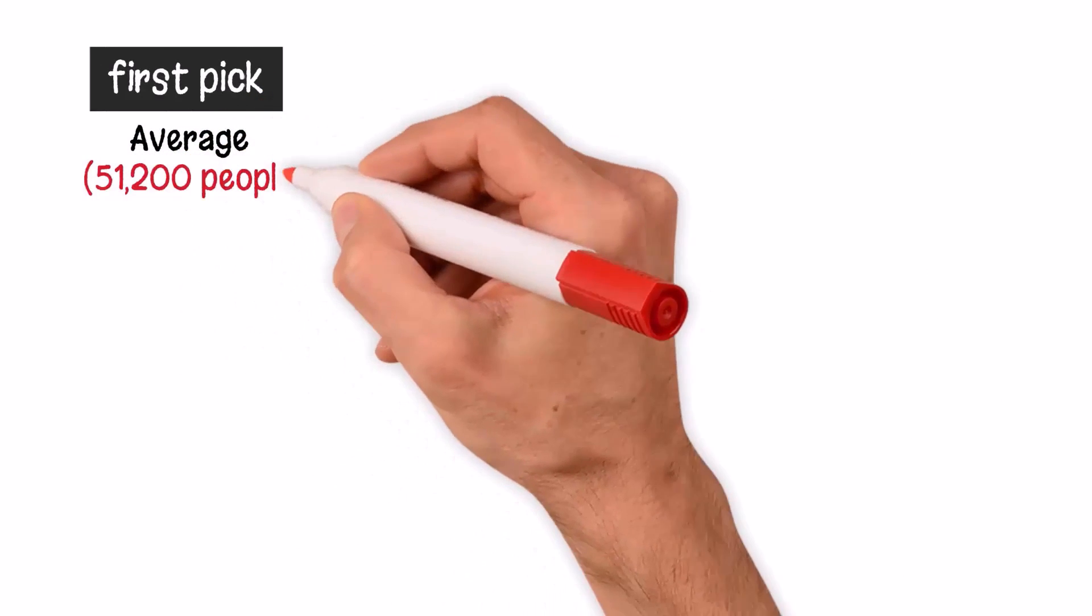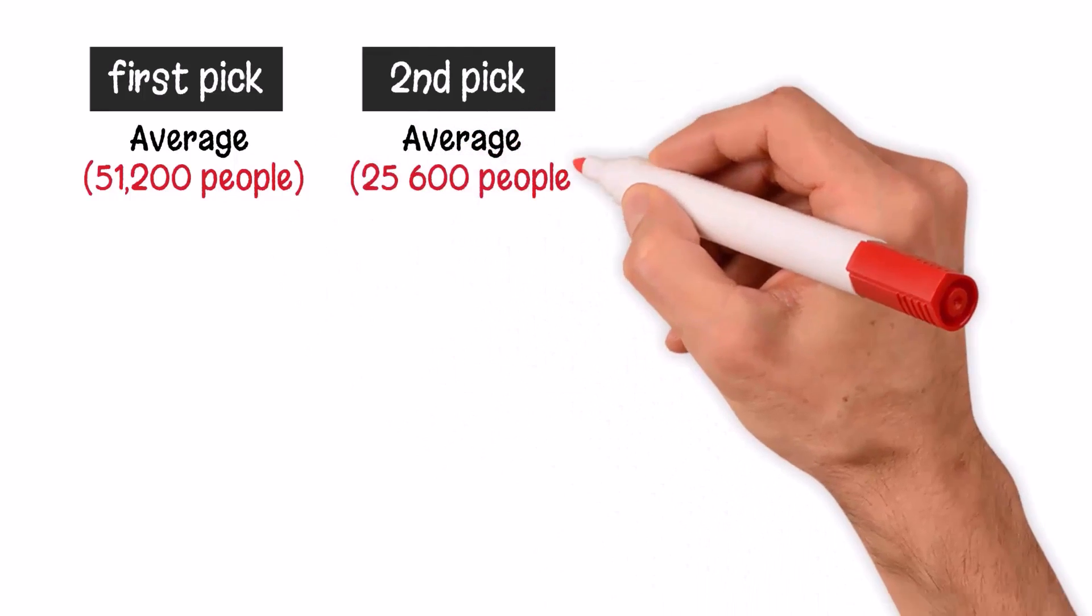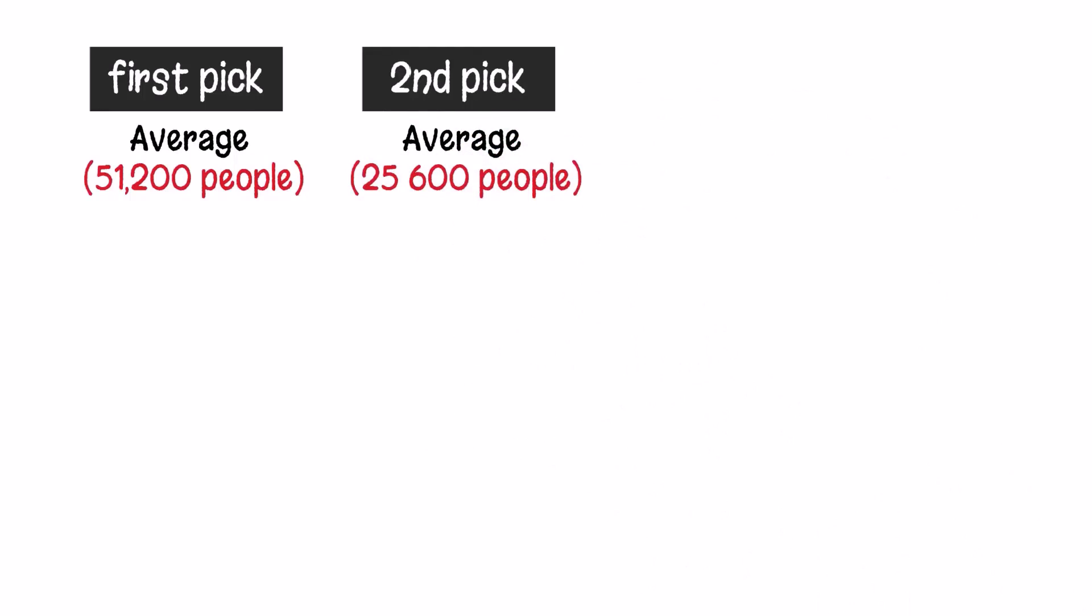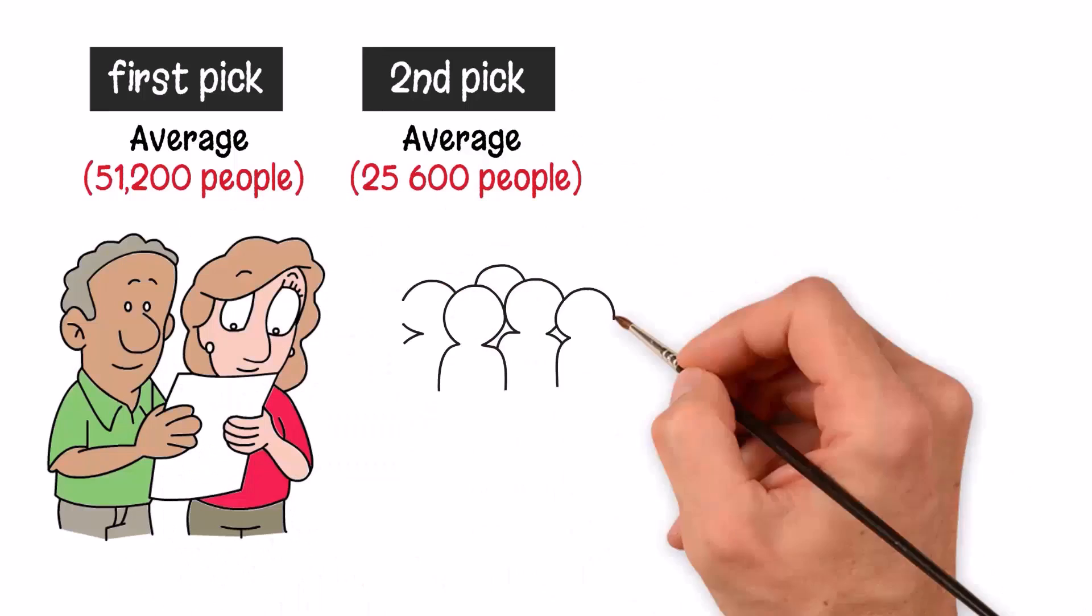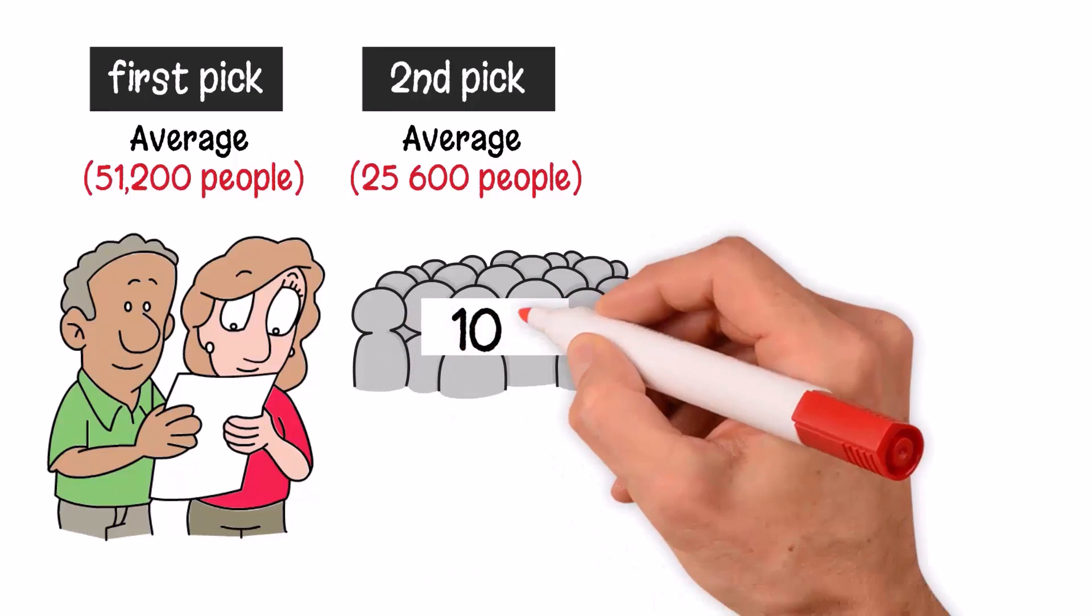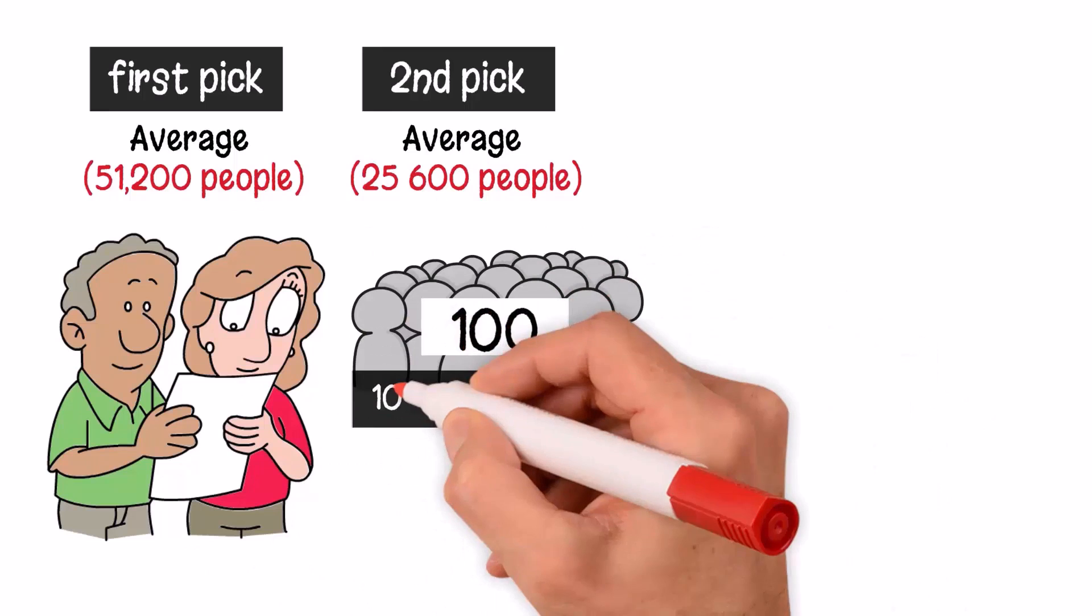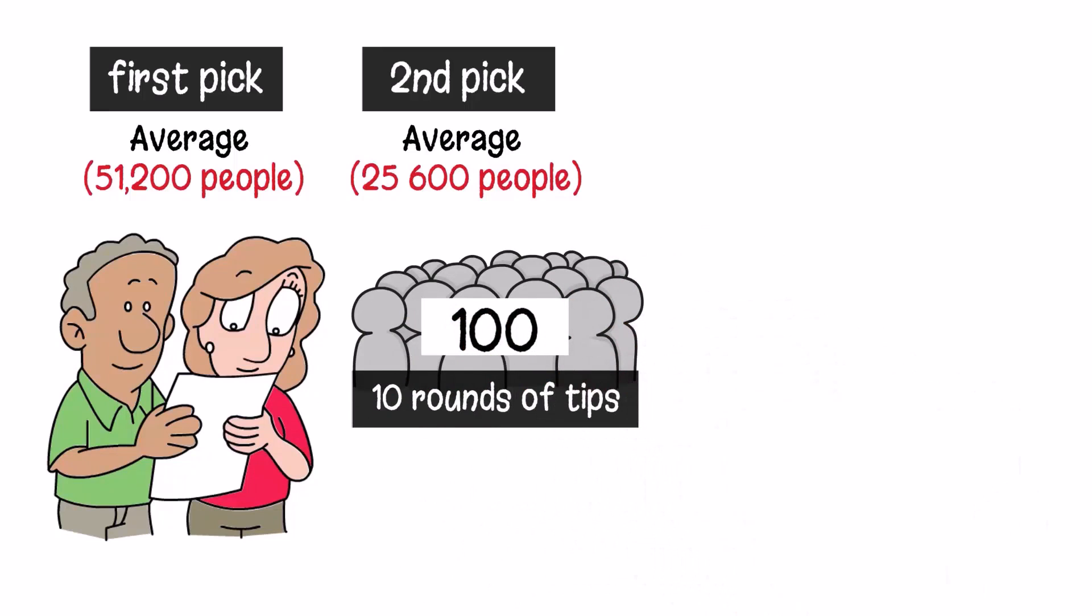After the first pick, there will still be on average 51,200 people that got the correct prediction—so half of the initial part. After the second, there'll be 25,600, so half of the remaining half. If the stock broker randomly picked stocks, there will still be a hundred people at the end of the 10 rounds of tips who would be very likely, very inclined to purchase the subscription given the historical performance of the broker.